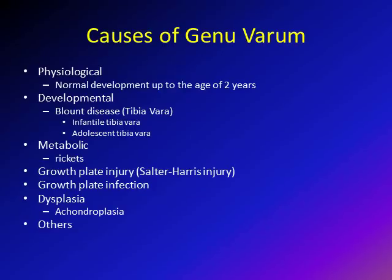What are the causes of Genu Varum in children? First is physiologic — in the normal development of children, they have Genu Varum up to the age of two years. Developmental diseases like Blount disease, or tibia vera, have two types: infantile and adolescent tibia vera. Metabolic conditions like rickets can cause Genu Varum, as can injury to the growth plate, known as a Salter-Harris injury.